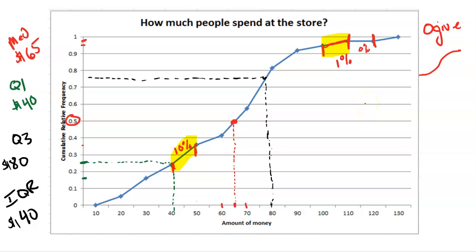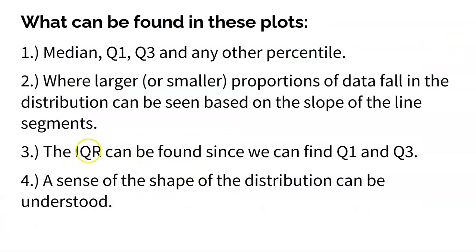It doesn't matter because not all data looks like that anyway. But these are pretty cool graphs, really simple to do. What can be found? The median, Q1, Q3, and any other percentile — I demonstrated you can find anything you want in terms of percentiles. Because we can look at the steepness of the lines, we can determine where larger or smaller proportions of data fall. We can also find the IQR because we know Q1 and Q3.